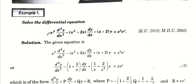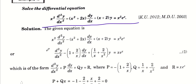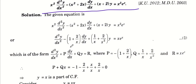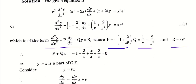अब इस पर based कुछ questions देखते हैं। पूरी equation को divide कर दिया, coefficient compare करने के बाद यह general equation है — P की value, Q की value और R की value मिली। P और Q की value को देखें: P + Qx करने पर 0 बन रहा है, इसलिए Y = x आपका part of CF है। First step complete।